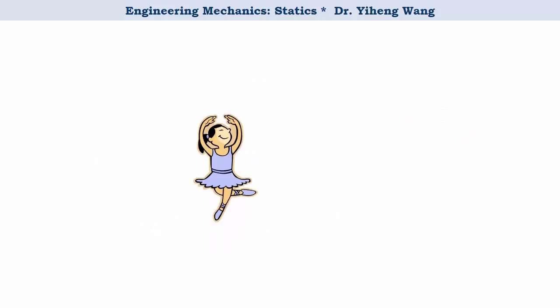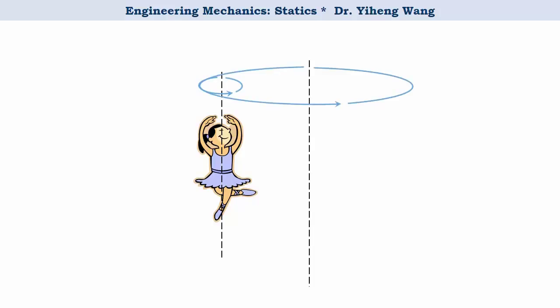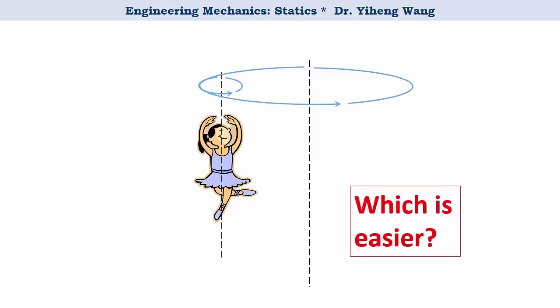As an example, imagine a ballet dancer spinning about her own centroidal axis, and then imagine trying to rotate her entire body about an axis that is further away. Which situation provides minimum resistance? The answer is when she is rotating about her own centroidal axis, because the moment of inertia calculated about the centroidal axis is always the smallest among all its parallel axes.